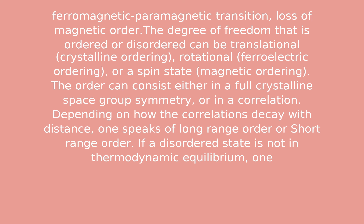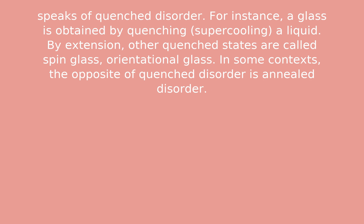If a disordered state is not in thermodynamic equilibrium, one speaks of quenched disorder. For instance, a glass is obtained by quenching a liquid. By extension, other quenched states are called spin glass or orientational glass.